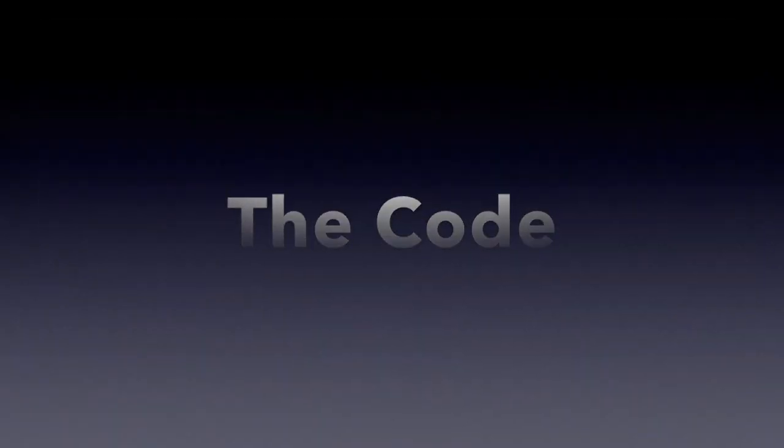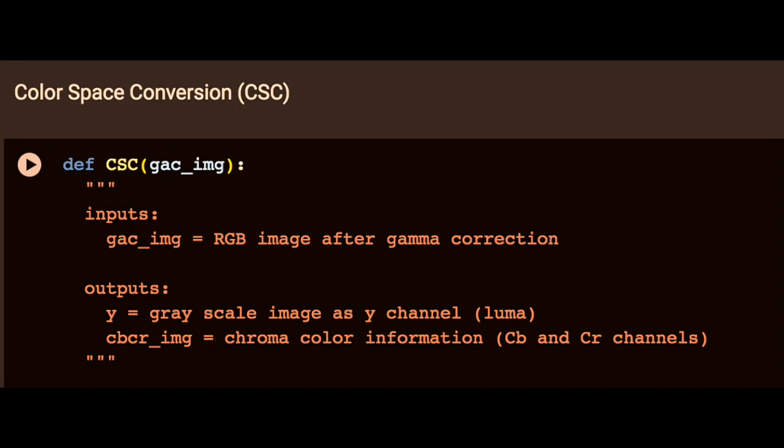Now let's have a look at the code. We start by defining the CSC function, which takes as input the Uint8 RGB gamma correction image we created in the last video. Our outputs will be the luminance channel Y, and an array holding both the Cb and Cr channels. This is more of a personal style choice. You could just as easily have chosen to separate all three channels or put them all together. It doesn't make a difference. The motivation behind it is that we will later apply different filters and transformations to luminance and chrominance, so I chose to split them this way.